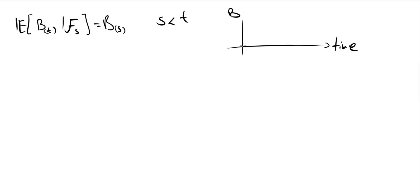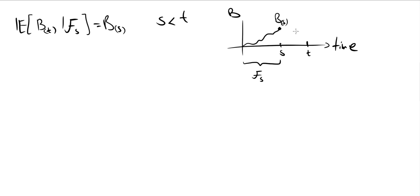You can think about it like this: if we have some Brownian motion and we look at it at time S, let's say it got to some value here. Now we want to check what is the expectation of the Brownian motion at time T given that we know all the information up to S — that is, the filtration. The theorem says we should expect to be exactly at that same value.